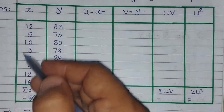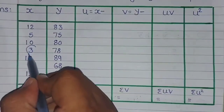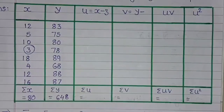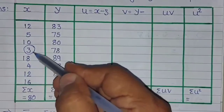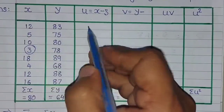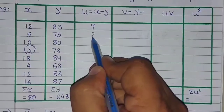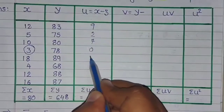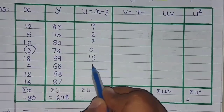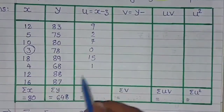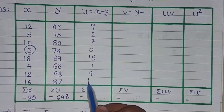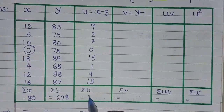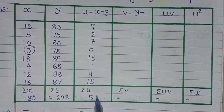We will take the least number, which is 3, so that we will not get minus values. So 12-3 will be 9, 5-3 will be 2, 10-3 will be 7, 3-3 will be 0, 18-3 will be 15, 4-3 will be 1, 12-3 will be 9, and 16-3 will be 13. When we total these, sigma u will be 56.